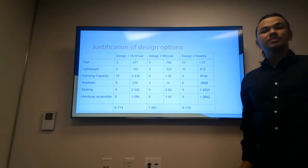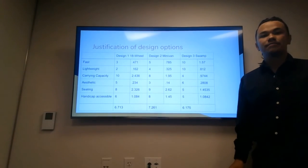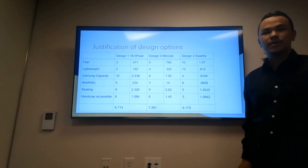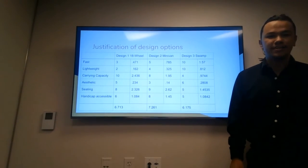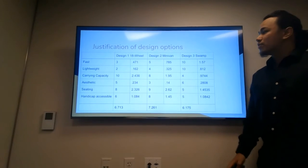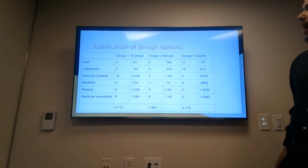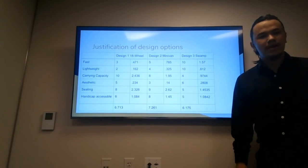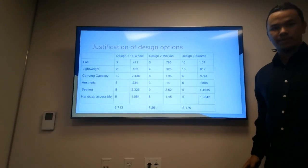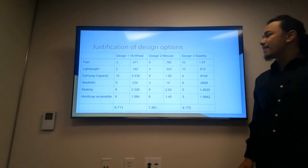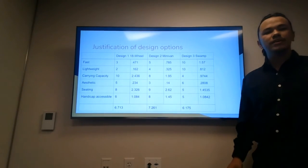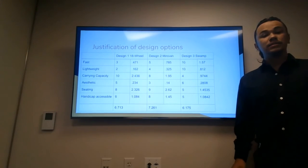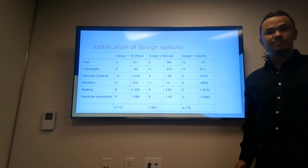The decision matrix is used to compare the criteria we have to the designs. Through the table, we calculate the best design by rating the criteria for each. The 18-wheeler has the highest carrying capacity but wasn't very fast or lightweight due to the amount of material that would be used. The minivan was well-rounded in most areas, having a higher seating capacity. The swamp boat is lightweight due to its small size, and the multi-use of the boat would improve its longevity when the world floods.